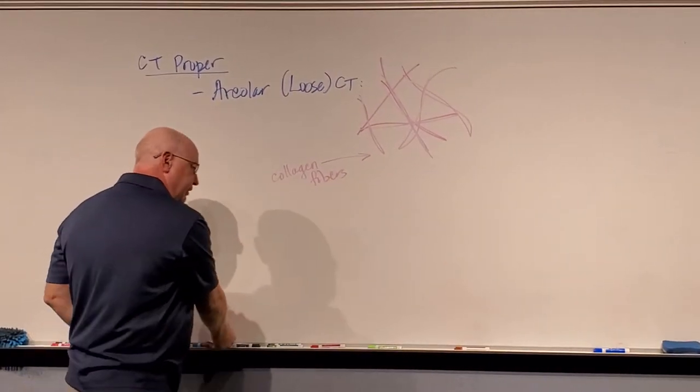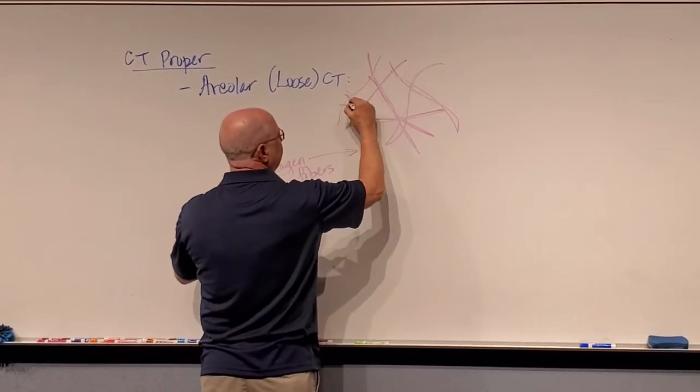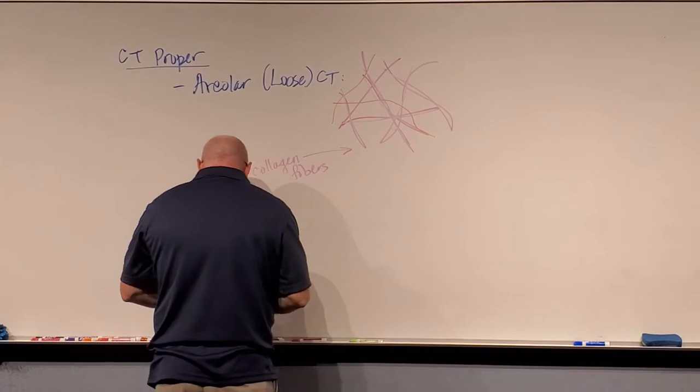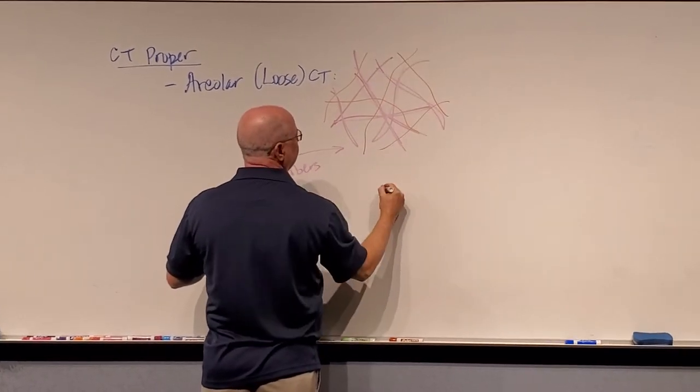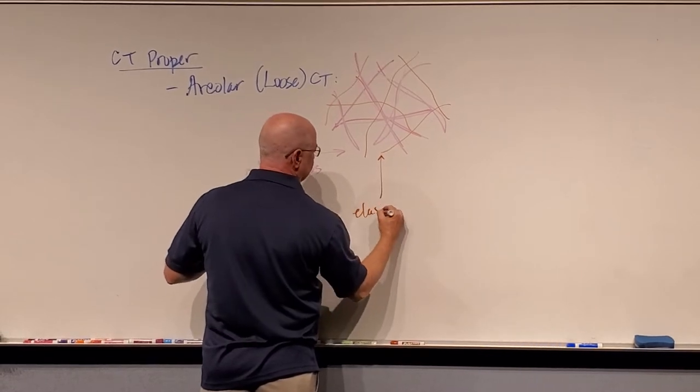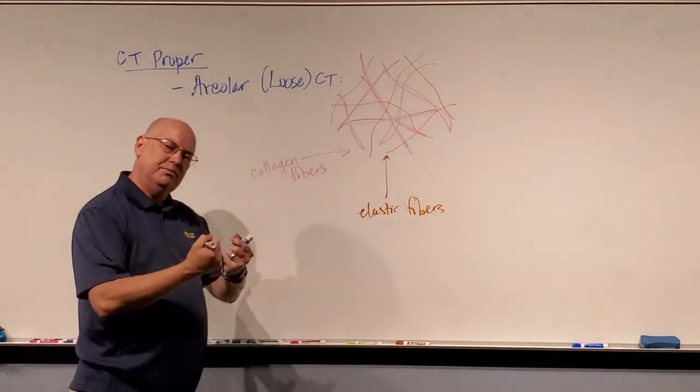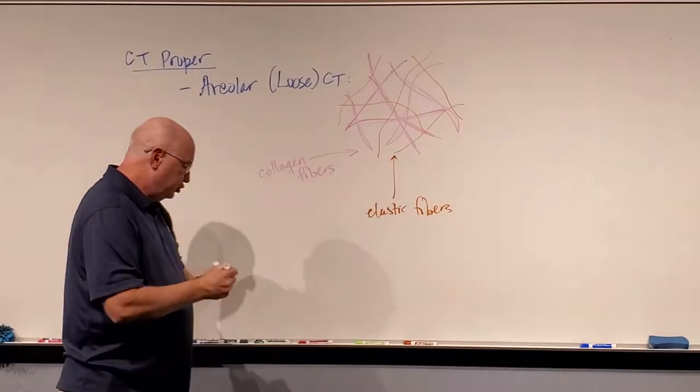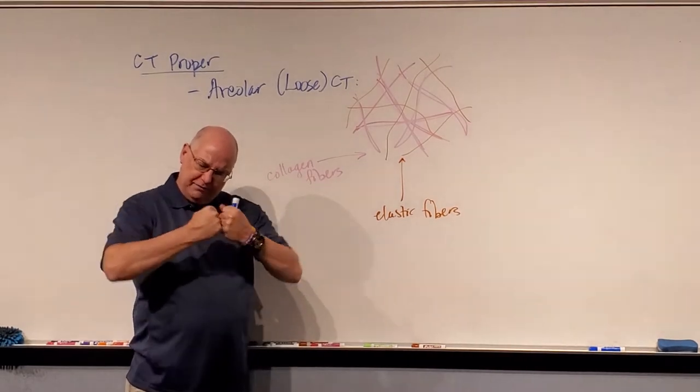Collagen makes it very strong from a different number of directions. Also in this tissue, we said that very often we can find these very thin dark fibers running through the tissue. Those thin dark fibers were called elastic fibers. Elastic fibers make it very flexible.